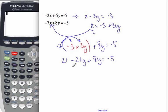Add 8y equals negative 5. Simplify the left-hand side. So we get what? Minus 13y.